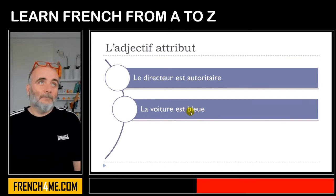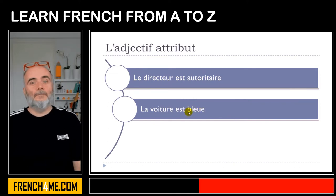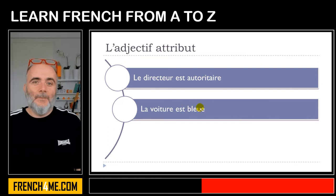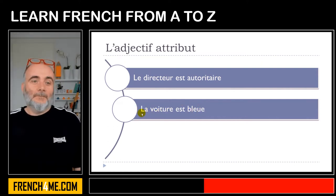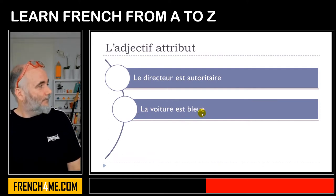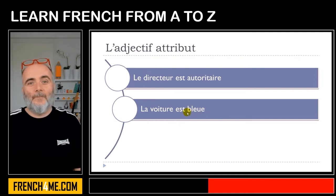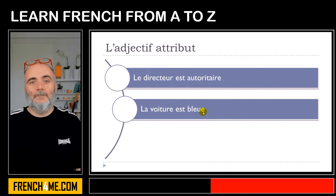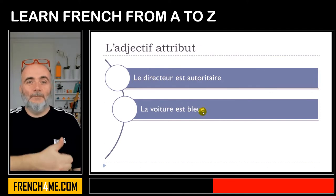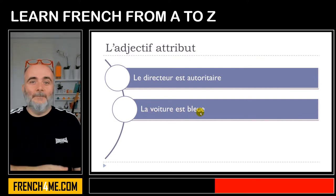In that case it's quite interesting because normally we get the adjective bleu — B, L, E, U — for the masculine or basic form. Here we have la voiture, which is feminine, so you should add an E at the end to make it bleue. Phonetically it doesn't change because you don't pronounce the E, so you hear bleu just as in the masculine form. But you still need to write bleue because it's the feminine form. La voiture est bleue.